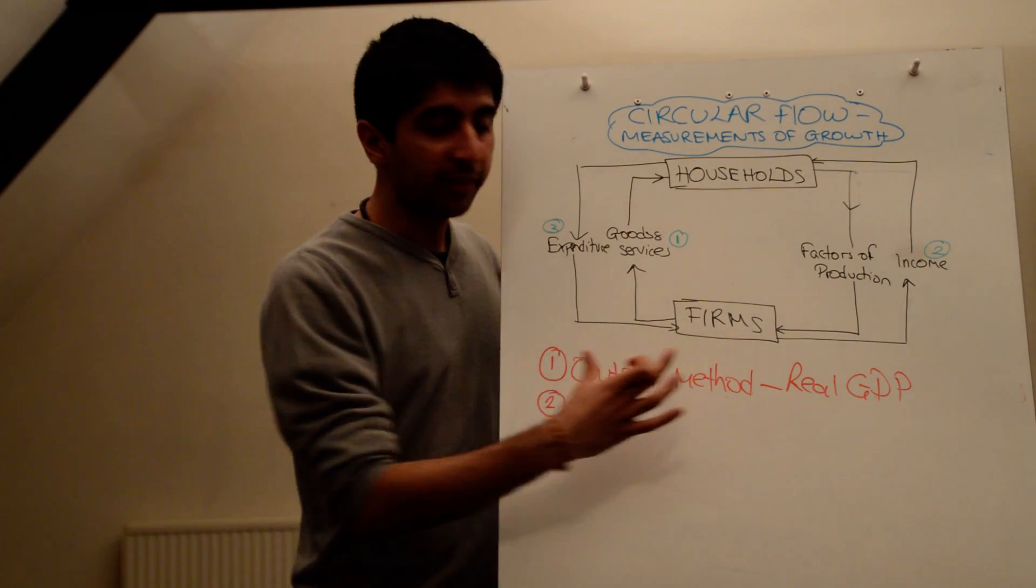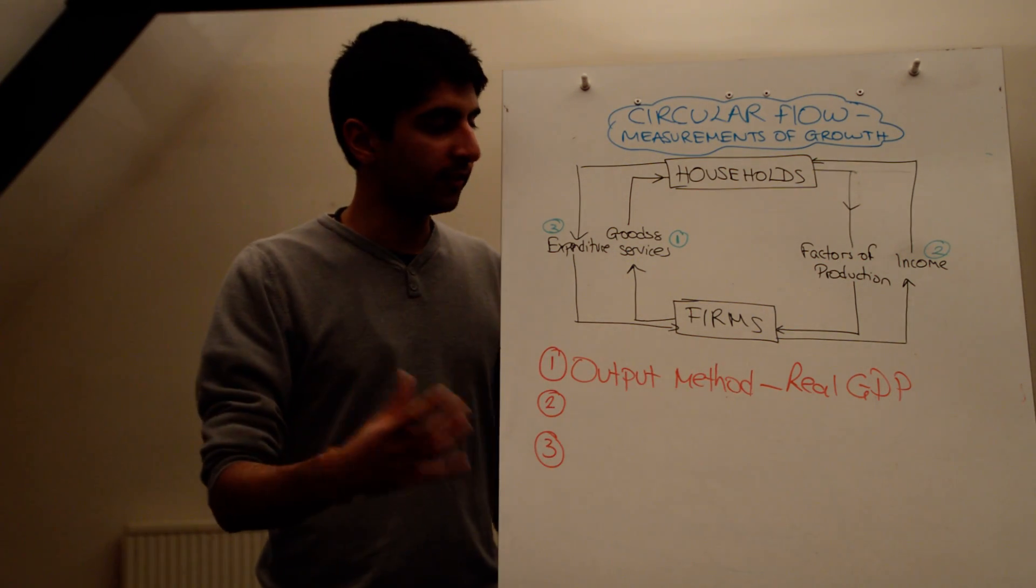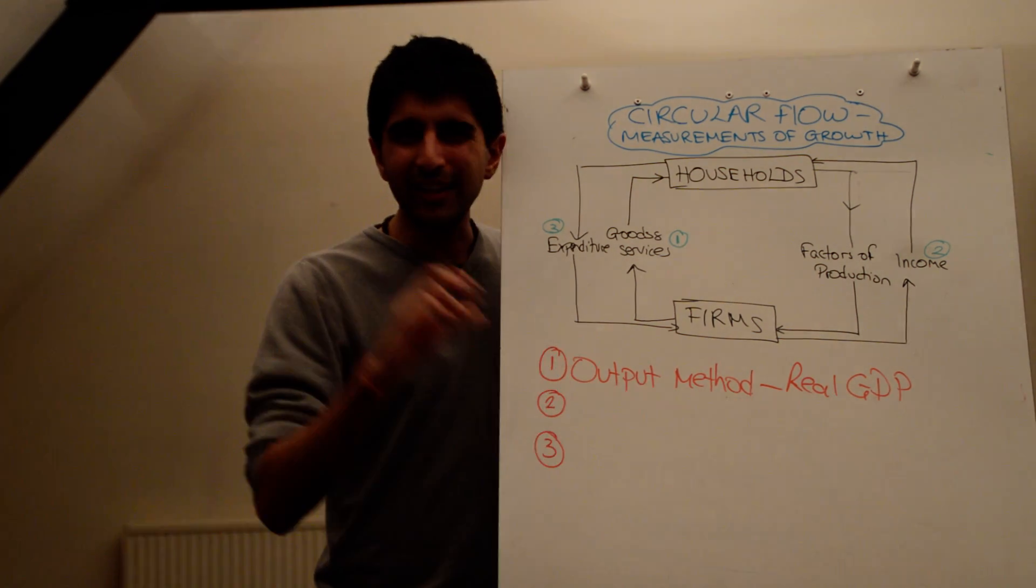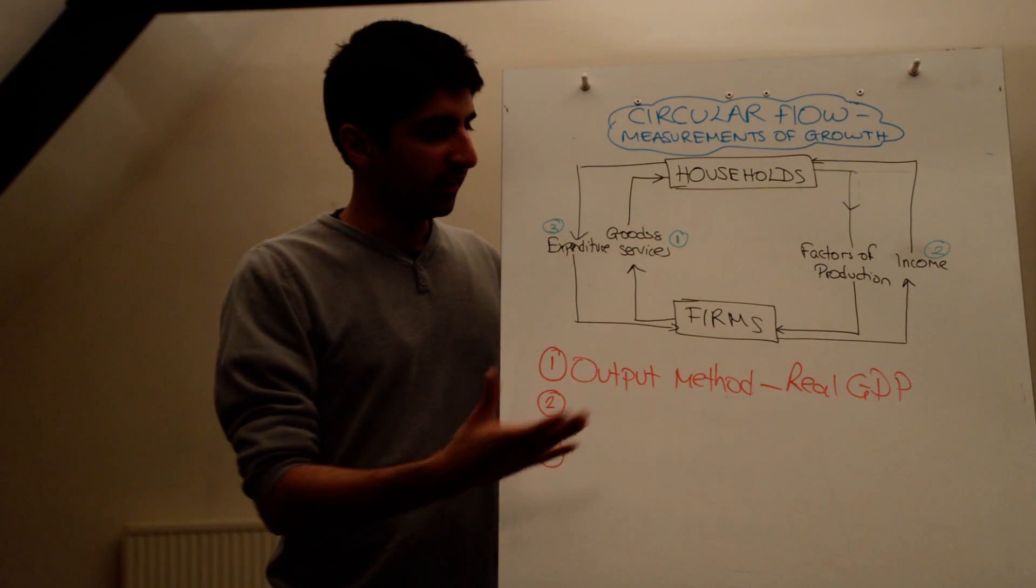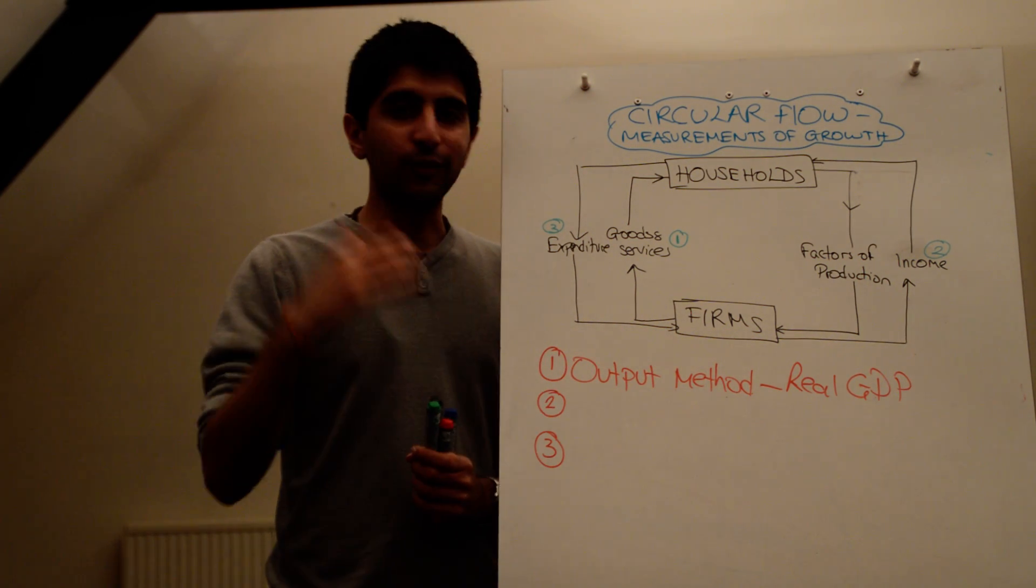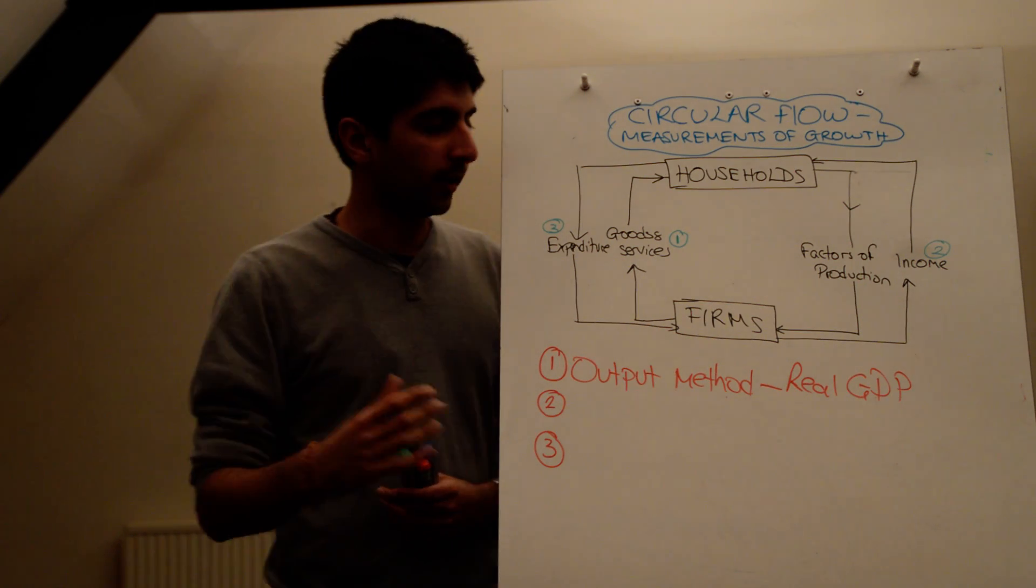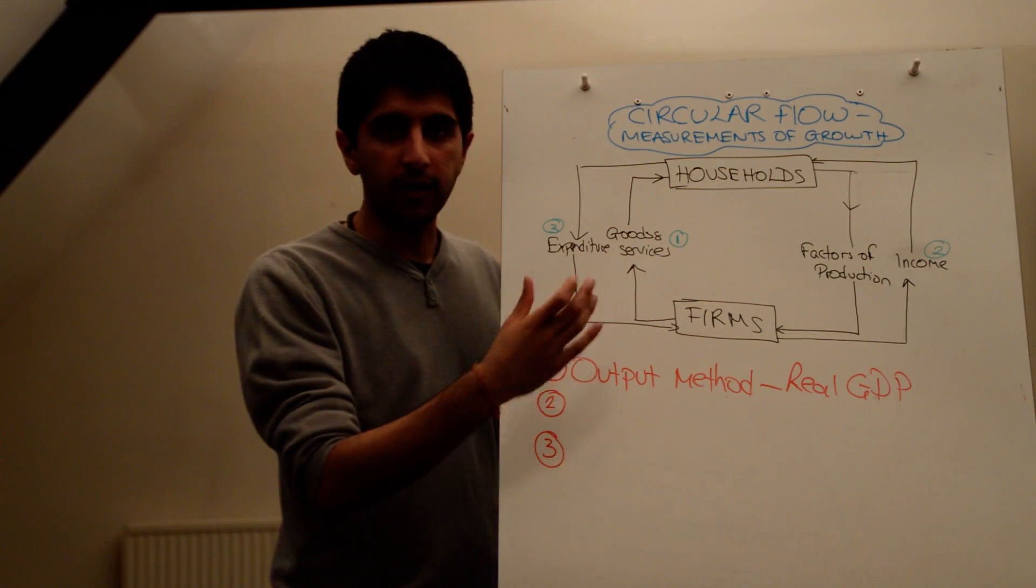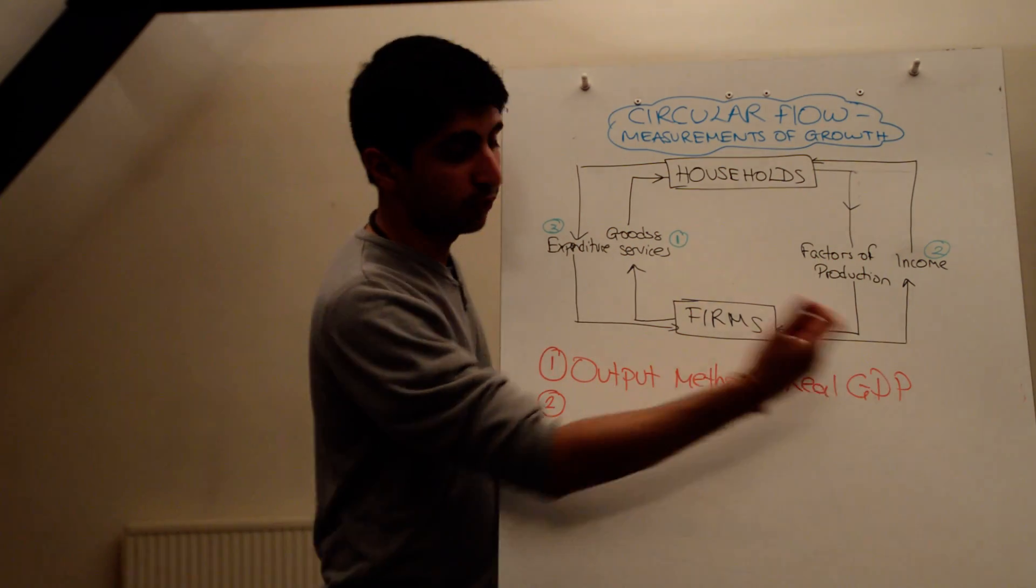So the output method, yes, it's the value of goods and services, but more specifically, it's the value added. And one key problem with this is the issue of double counting, like I've just said. It's hard to ensure that there isn't double counting going on and that we don't skew our figures and inflate them too high. So that's the output method. The value added of all the goods and services produced in the economy. Basically, it's real GDP.